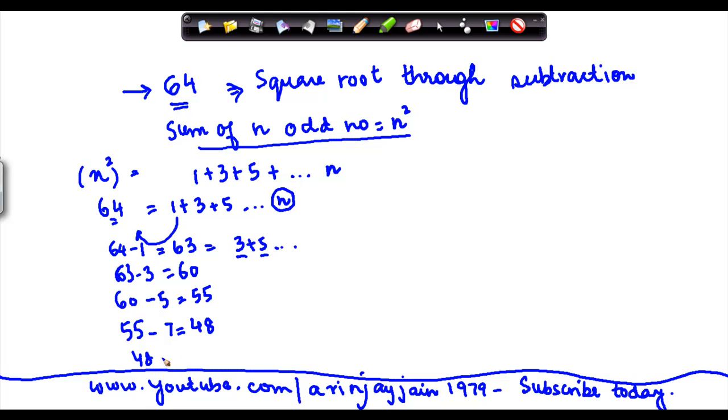From 48 I subtract 9. Let me take it here. 39 minus 11 is 28. 28 minus 13 is equal to 15. And then 15 minus 15 is equal to 0.